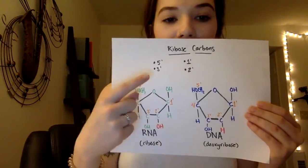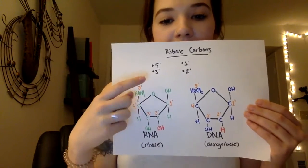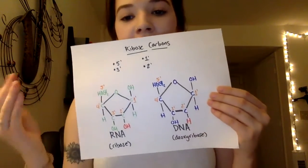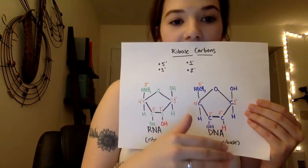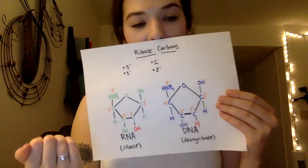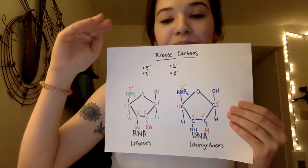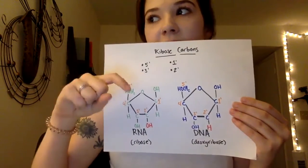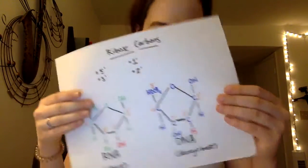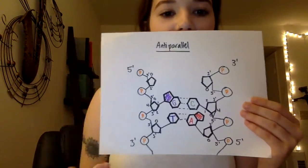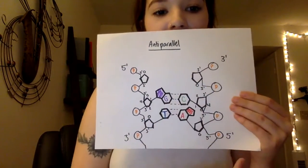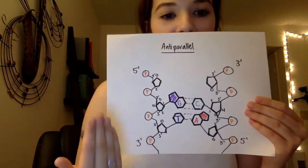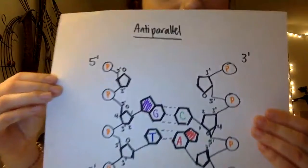Then we have three prime, which is basically where, as we make polymers, we attach to the previous nucleotide. Five prime is above the sugar ring and it's also an attachment point to the previous nucleotide. DNA has anti-parallelism, which means one strand runs five prime to three prime and the other strand runs three prime to five prime, going in opposite directions.